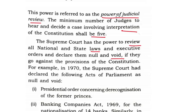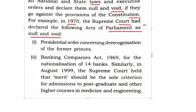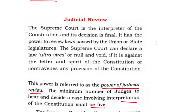For example, in 1970, the Supreme Court declared the following acts of parliament as null and void: the presidential order concerning de-recognition of the former princes, and the Banking Companies Act 1969 for the nationalization of 14 banks. Similarly, in August 1999, the Supreme Court held that merit should be the sole criteria for admissions to postgraduate and other higher courses in Medicine and Engineering. These are examples of judicial review where the Supreme Court found laws to be not correct and made them null and void.